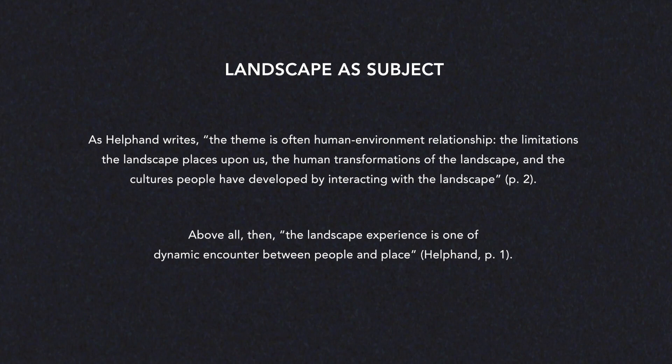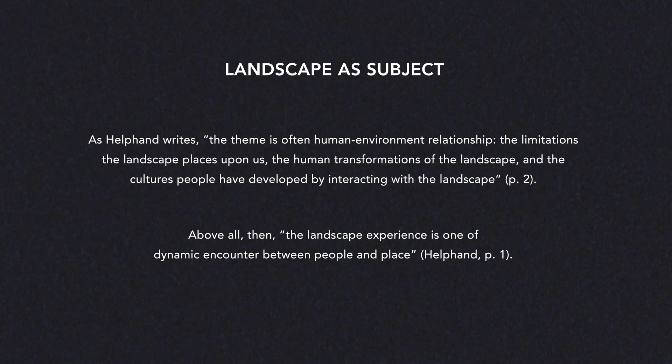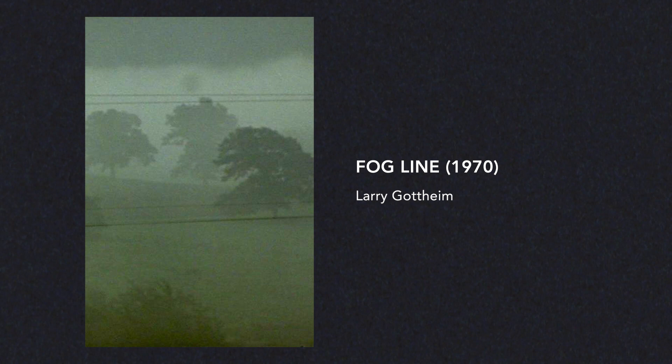A brilliant example of this can be seen in Fogline by Larry Gotheim. Filmed in 1970, Fogline is an experimental short silent film that features one static shot for 11 minutes. The frame encases a rural scene shrouded by fog, which slowly lifts to partially clarify the elements in the image — previously hidden trees in the distance, high tension wires splicing the frame horizontally, and the faint silhouette of two horses grazing.